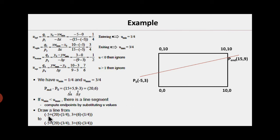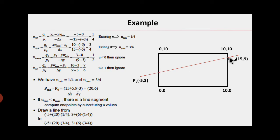At u_min = 1/4: x = x0 + delta_x × u_min. Delta_x = 15 - (-5) = 20. So x = x0 + 20 × (1/4). Similarly y = y0 + delta_y × u_min, where y0 = 3 and delta_y = 9 - 3 = 6, giving y = 3 + 6 × (1/4). This coordinate is the first intersection point P0'. For the second intersection point, use u_max = 3/4: x = x0 + delta_x × u_max and y = y0 + delta_y × u_max.